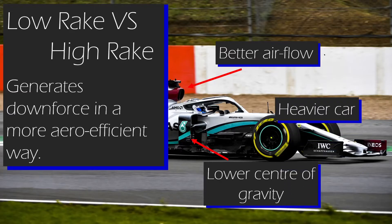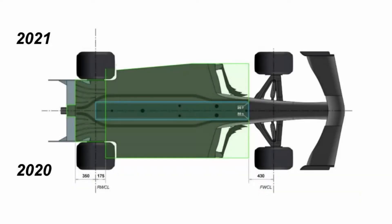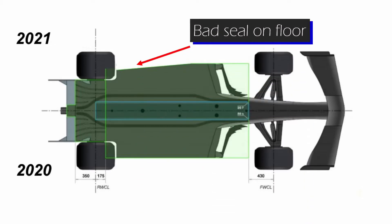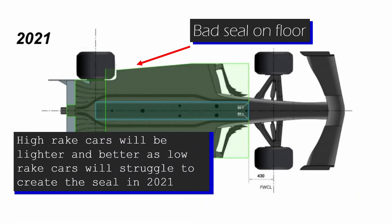However, the car will need to be longer, and therefore it will need to be heavier. Due to the 2021 regulations reducing the floor surface area by cutting out a triangle at the back, it means that if there isn't a good seal at the edge of the floor, then you will lose any downforce generated by the larger floor surface area. So therefore, the cars with high rake will be lighter, and due to the fact that low rake cars can't create a good seal due to the new regulations, they'll probably create more downforce, as cars like Mercedes will feel like they're using a floor the same size as Red Bull without using the high rake concept.